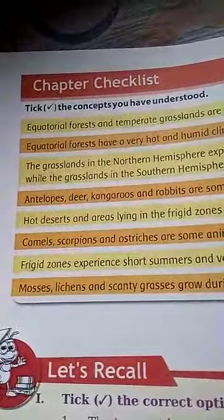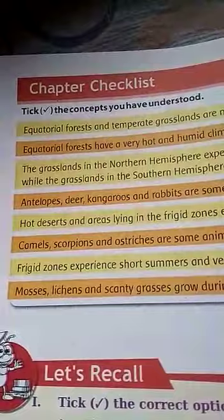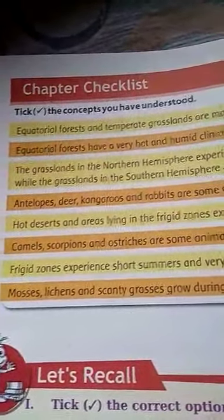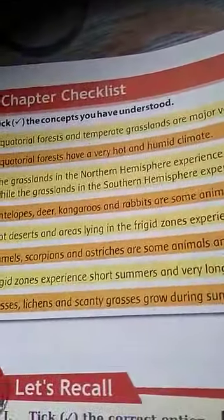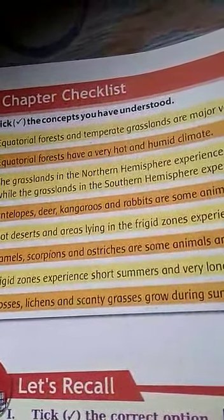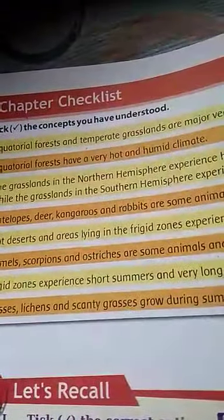In this chapter we studied about the equatorial forest, grassland, desert, and freeze zone. So one by one we will discuss. First of all, equatorial forest and temperate grassland are major vegetation zones of the world. In this chapter we discussed about both of them.